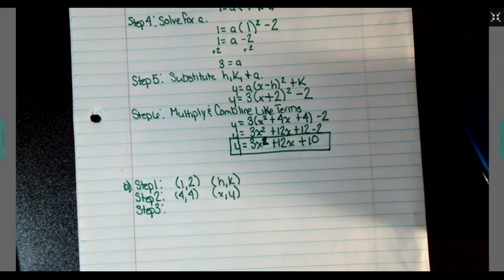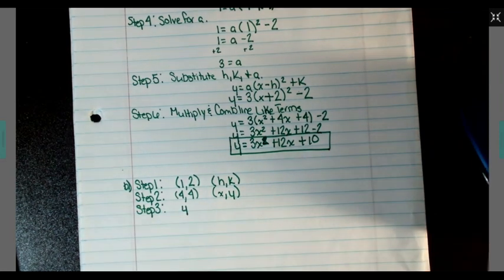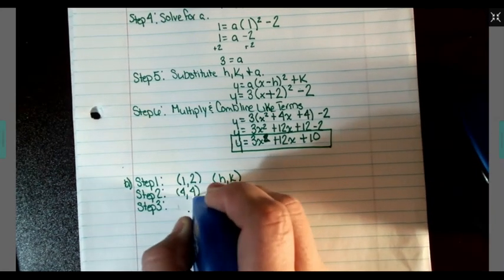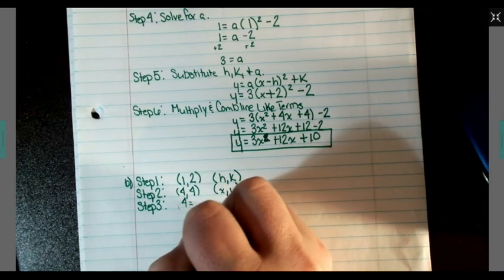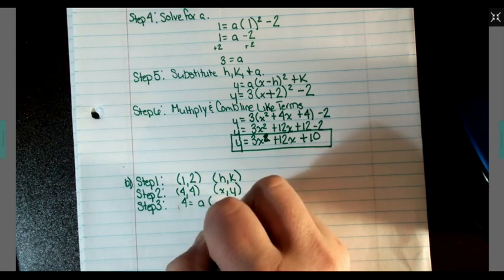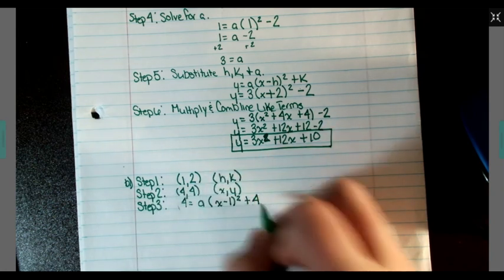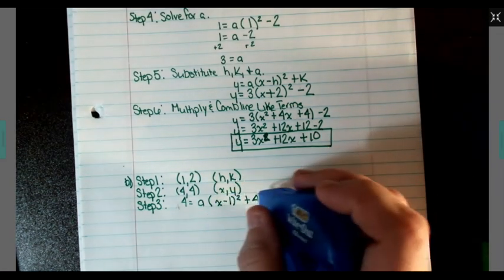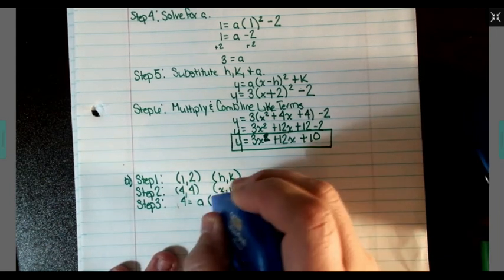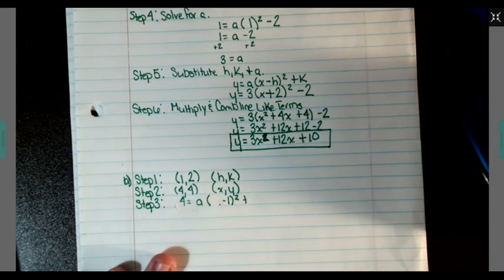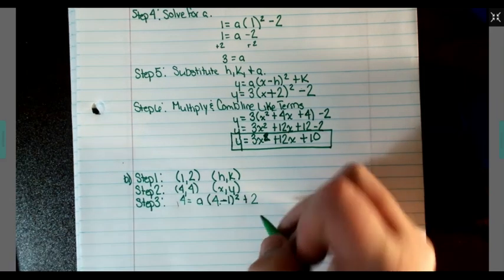Step 3: Substitute. So we will have 4 equals A times X minus 1 squared plus 4, and that shouldn't be X. Remember our X and our Y were 4 and 4. And this should have been the 2 for K.